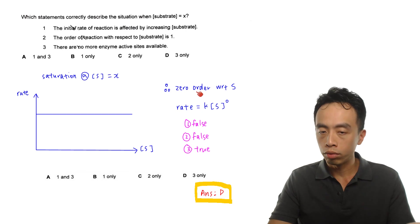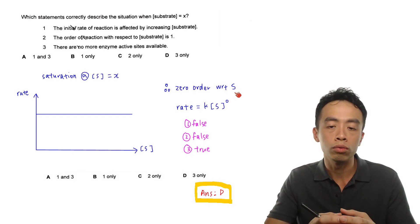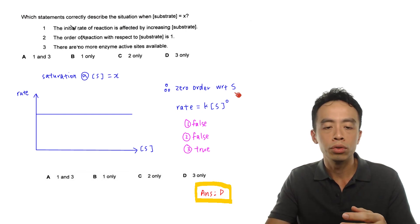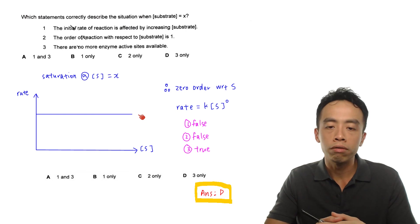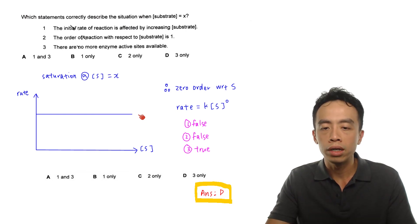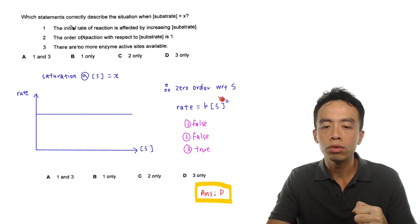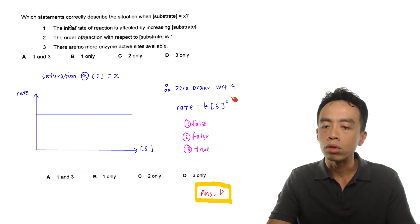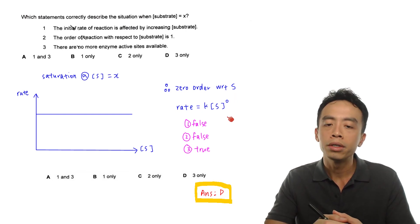This means the rate of reaction becomes zero order with respect to the concentration of substrate, because as you increase substrate concentration, there is no change in the rate. That is why we write this as zero order with respect to substrate: rate equals rate constant K multiplied by concentration of substrate to the power of zero, because the order with respect to substrate is zero.